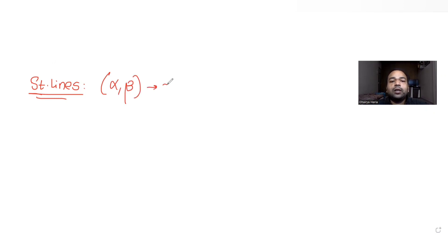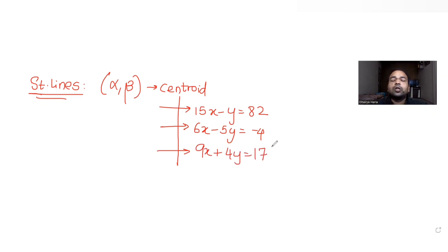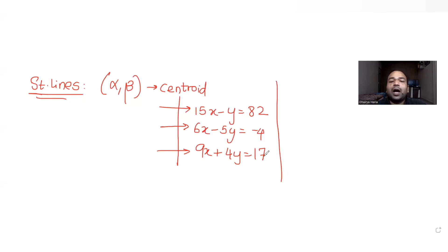The question tells us that alpha and beta are the centroid of the triangle which is formed by different lines. The equations of the lines given are: the first is 15x minus y equal to 82, the second is 6x minus 5y equal to minus 4, and the third is 9x plus 5y. Our triangle is formed by these three lines.